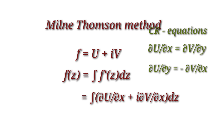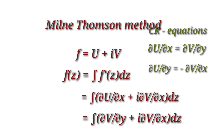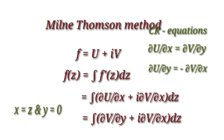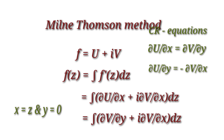If v is given, we can find ∂v/∂x and ∂v/∂y. So we have to replace ∂u/∂x in terms of partial derivatives of v by using the Cauchy-Riemann equations. By CR equations, ∂u/∂x = ∂v/∂y. So f(z) = integral of (∂v/∂y + i·∂v/∂x) dz. Next, put x = z and y = 0. Then the integrand is a function of z alone, so we can easily integrate and get the required analytic function.